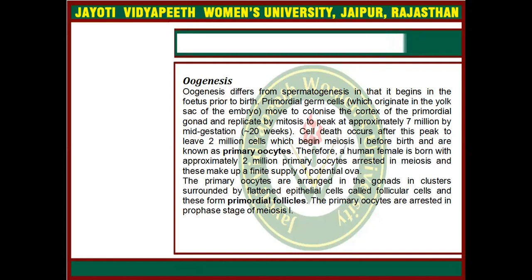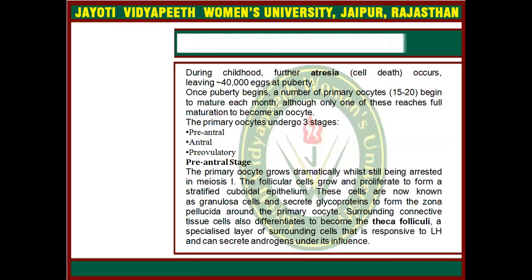The primary oocytes are arranged in the gonad in clusters surrounded by flattened epithelial cells called follicular cells, and these form primordial follicles. The primary oocytes are arrested in the prophase stage of meiosis 1. During childhood, further atresia occurs, leaving approximately 40,000 eggs at puberty.